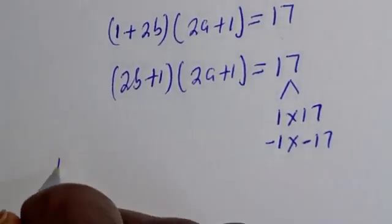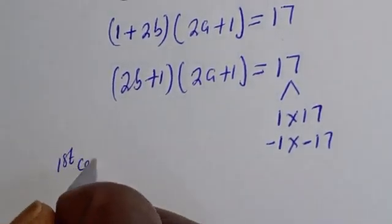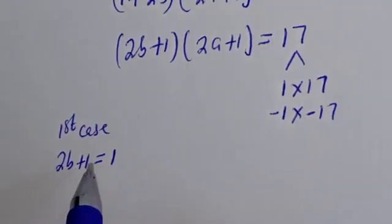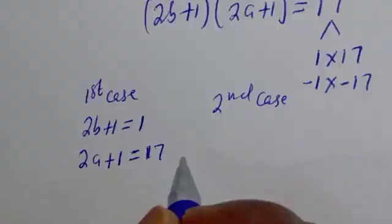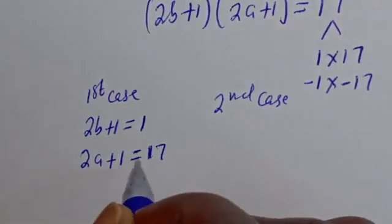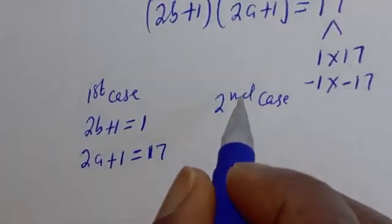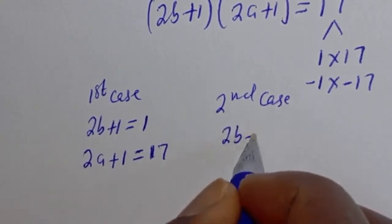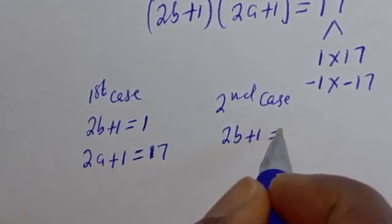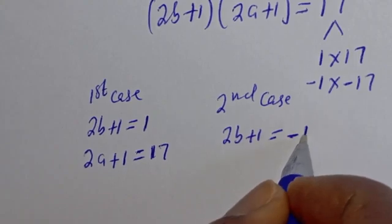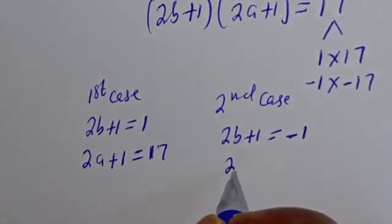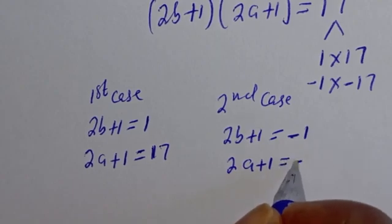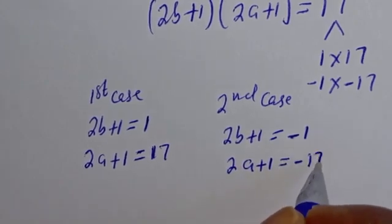The first case is: 2B plus 1 is equal to 1 and 2A plus 1 is equal to 17. Then from the second case also, 2B plus 1 is equal to minus 1, and 2A plus 1 is equal to minus 17.